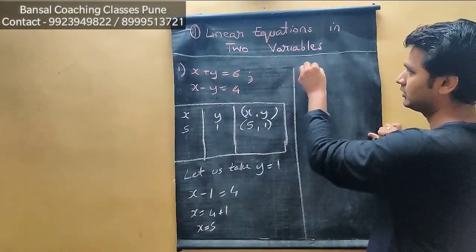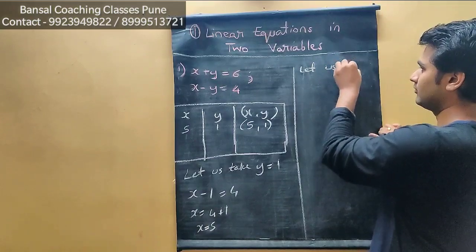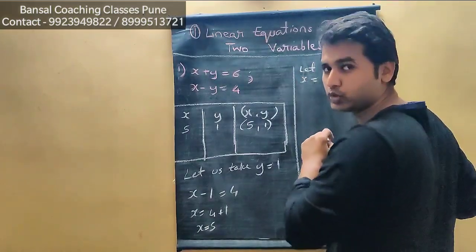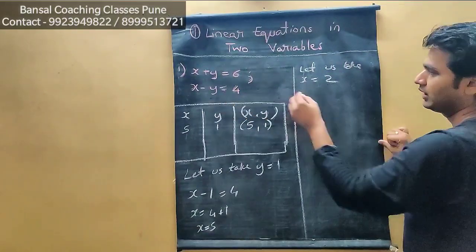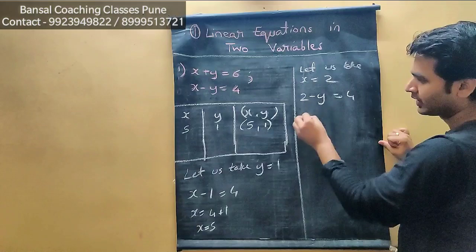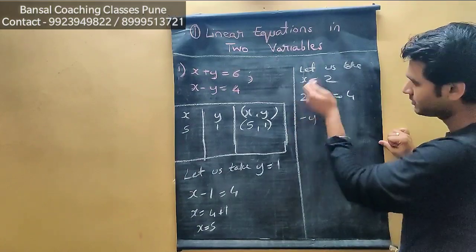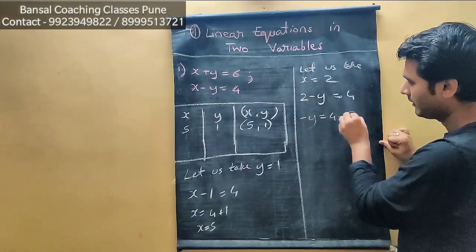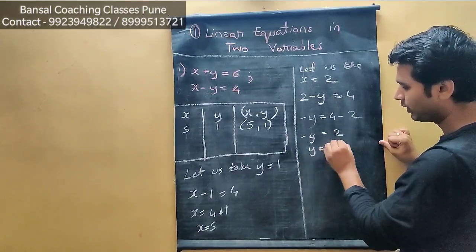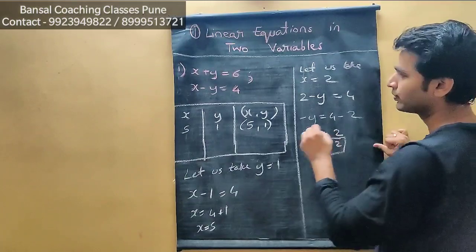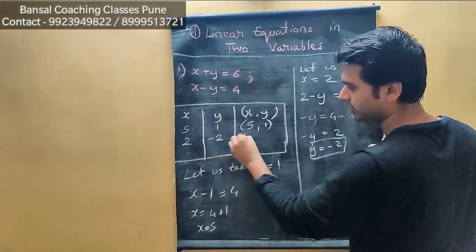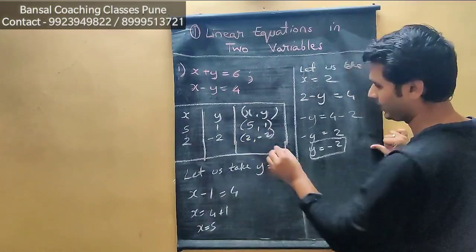For the second value, let us take x is equal to 2. So 2 minus y equals 4, therefore minus y equals 4 minus 2, minus y equals 2, so y equals minus 2. When x is 2, y is minus 2 — point (2, -2).